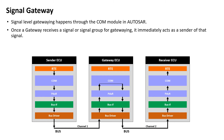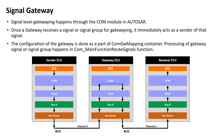Note that a gateway ECU is needed since there is no direct CAN channel connecting the sender and receiver ECU. COM gateway is strictly configured as gateway independent of the content of the signal or signal group. The configuration is done as part of the COM gateway mapping container, and processing happens in the COM main function route signals function.